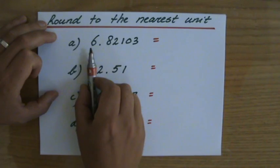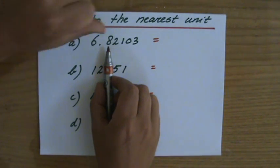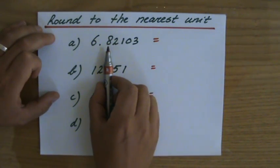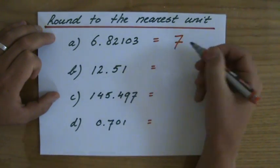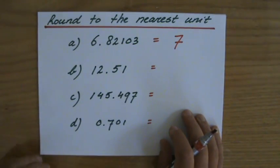So six point eight, I'm not really interested in those other numbers, just the eight which tells me that the six goes up to seven. So to the nearest unit, six point eight two one oh three is seven.